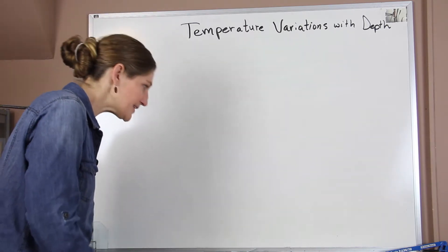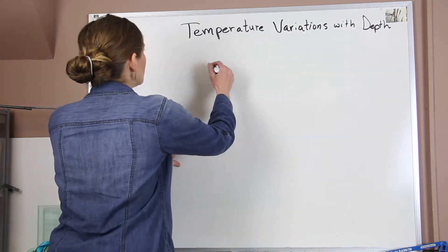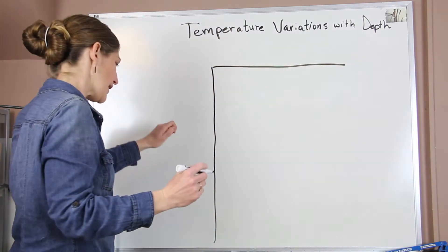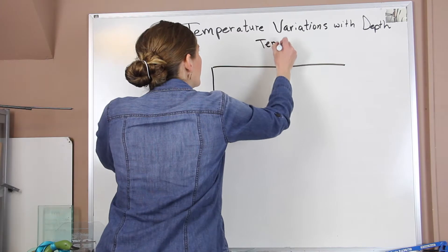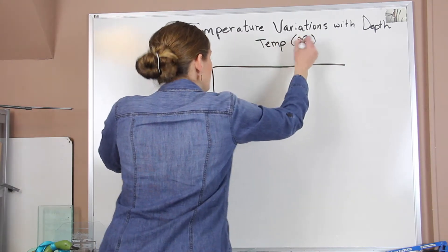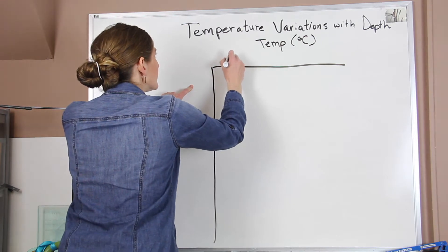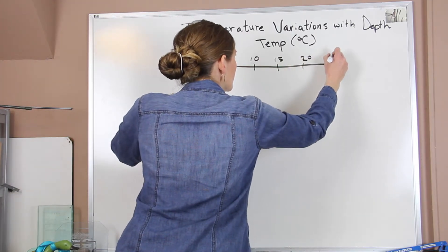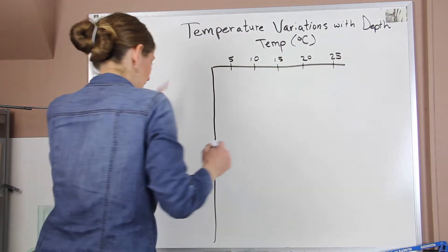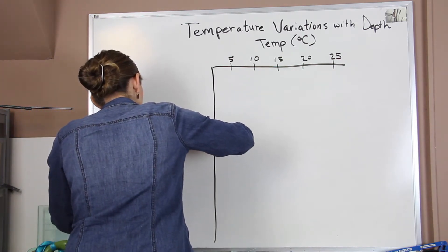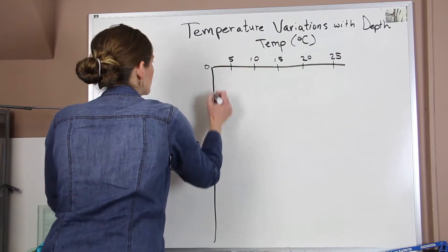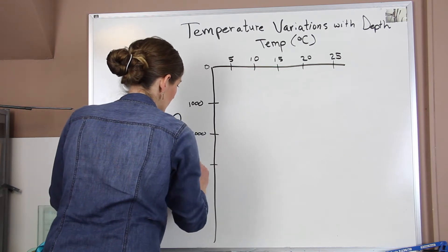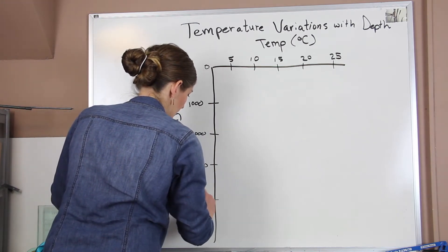When we start to draw these out, we're going to draw a nice profile and put all three on the same scale. Temperature is going to be on the top and it will be in degrees Celsius, going from 0, 5, 10, 15, 20, and 25. And then our depth will be on our vertical axis in meters from 0, 2,000, and 3,000.